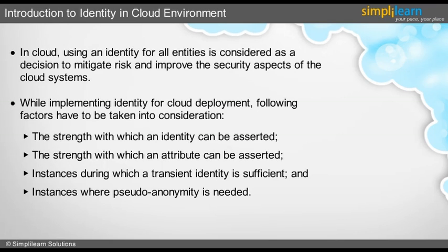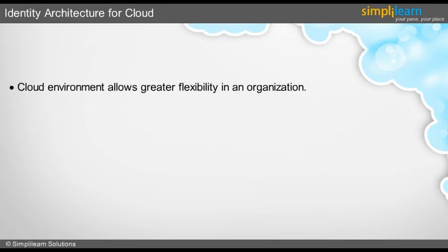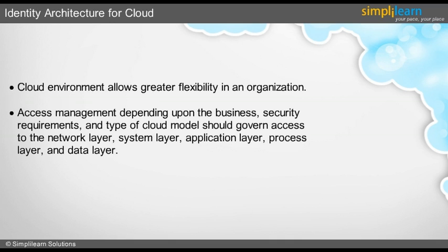In the next slide, we will learn about identity architecture for cloud. Cloud environment allows great flexibility in an organization, whether deployed as a private cloud or external public cloud. In a cloud environment, identity varies depending upon the type of deployment. For instance, if it is internal or perimeterized, it has the ability to accept multiple sources of identity and attributes. Access management, depending on the business, security requirements, and type of cloud model, should govern access to the network layer, system layer, application layer, process layer, and data layer.